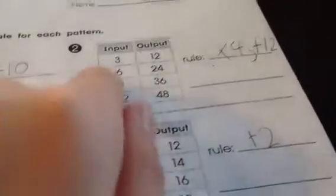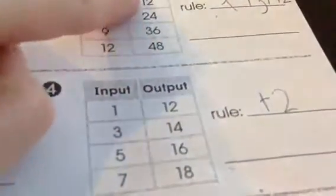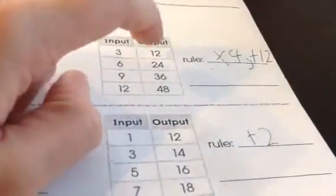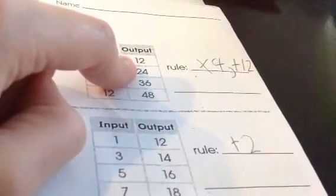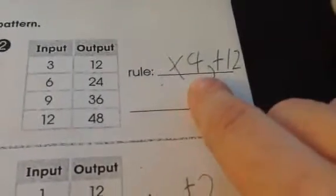All right, so that's much better. Six times four. And then how do you get twelve plus what equals twenty-four? I'll give you a little time to think. All right, it is twelve. And twenty-four plus what equals thirty-six? Twelve. So the rule is times four and plus twelve.